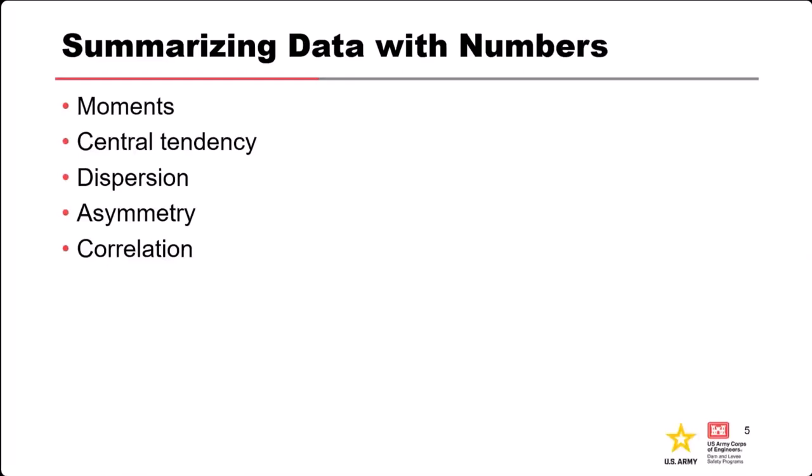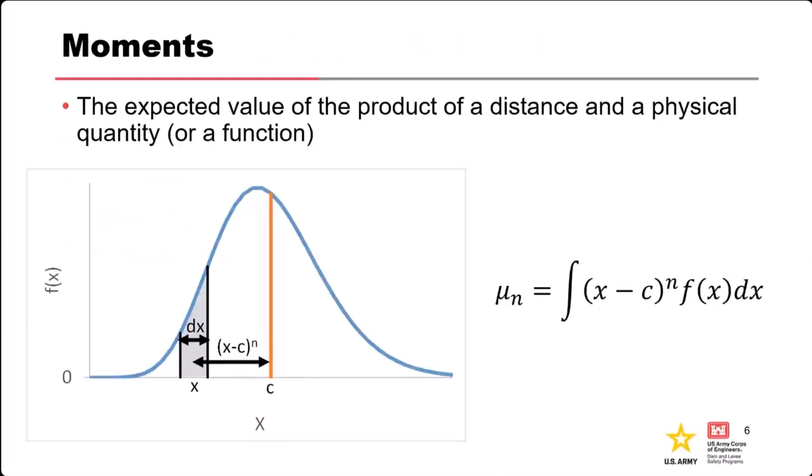We'll also touch on correlation of data sets. So, refresher on moments — many of you probably have an engineering background, so we all learned about moments in engineering mechanics: things like center of mass, moment of inertia, et cetera. Moments in risk analysis and probability and statistics are mathematically the same thing as in engineering mechanics. The general definition of a moment that applies to probability, statistics, mechanics, and physics is the expected value of the product of some distance and a physical quantity or function.